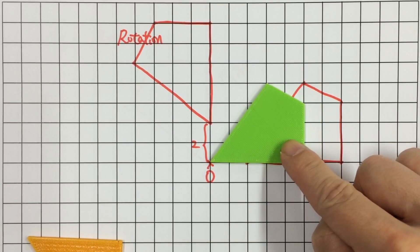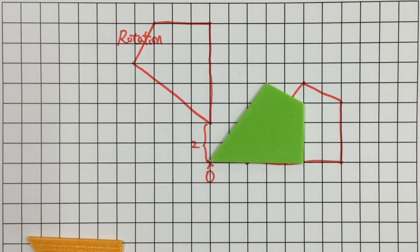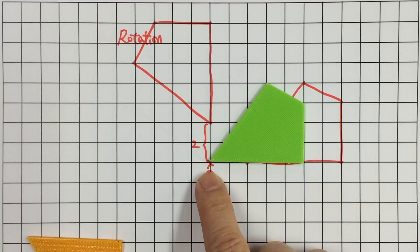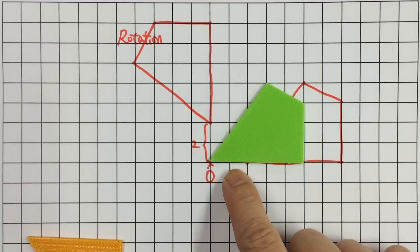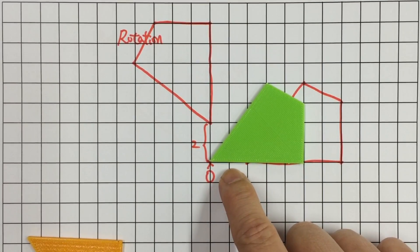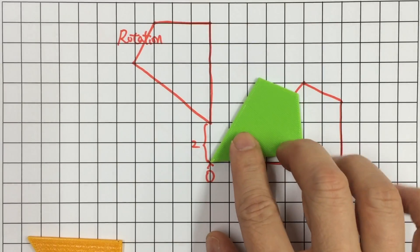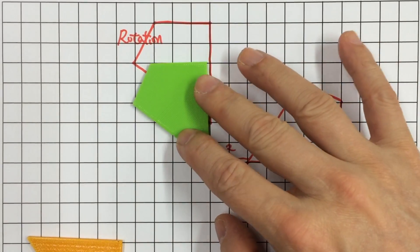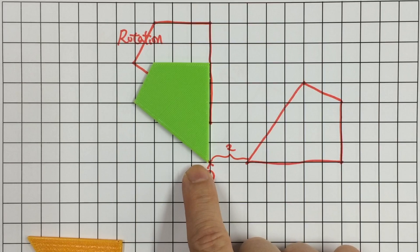Step one, move the object towards the center of rotation so that one of the vertices touched O. Here, we move the object to the left-hand side by two units. And then rotate by 90 degrees. This is the second step.